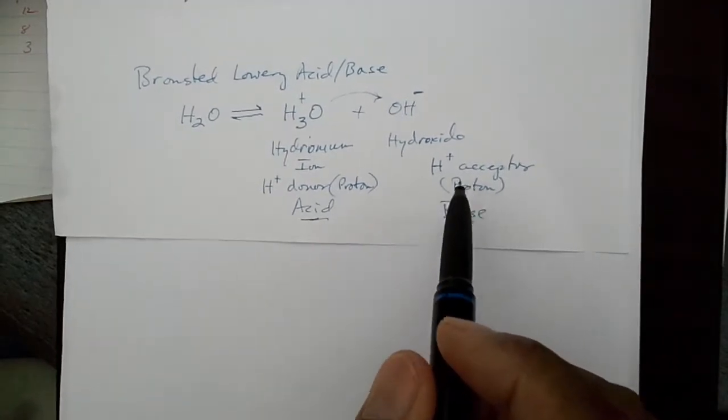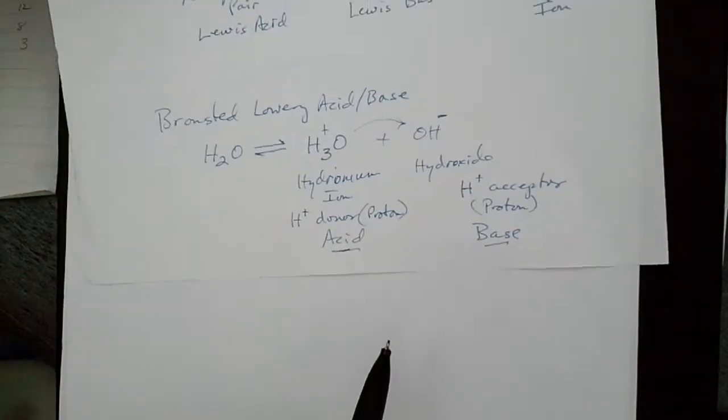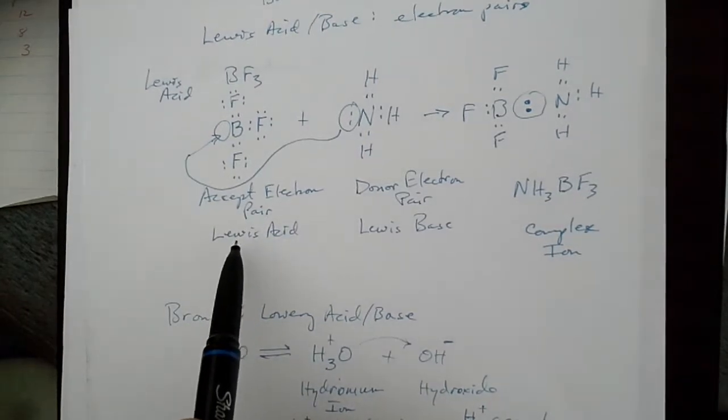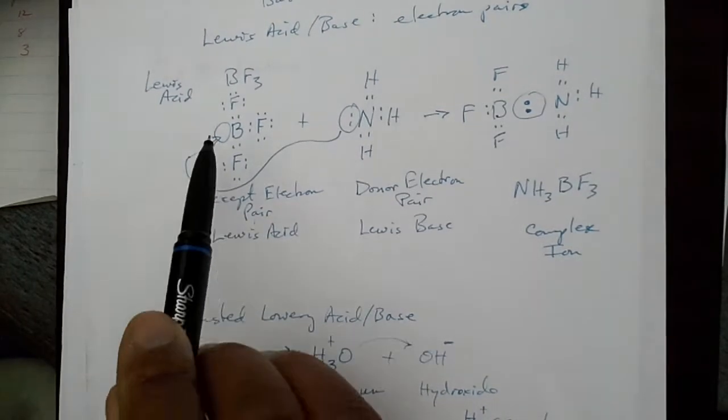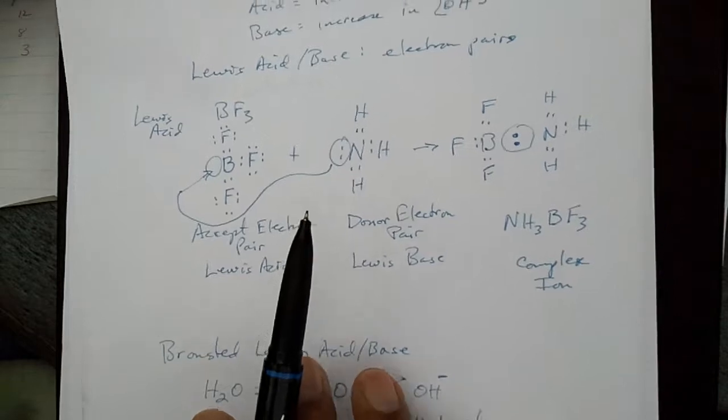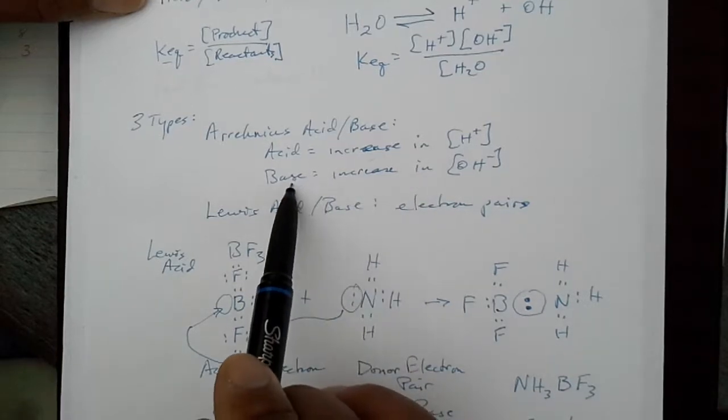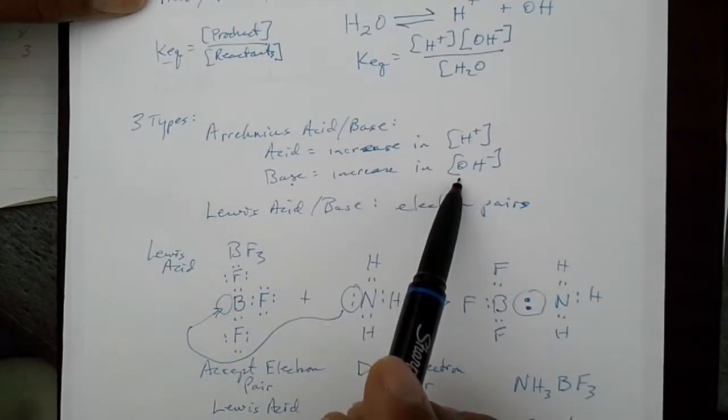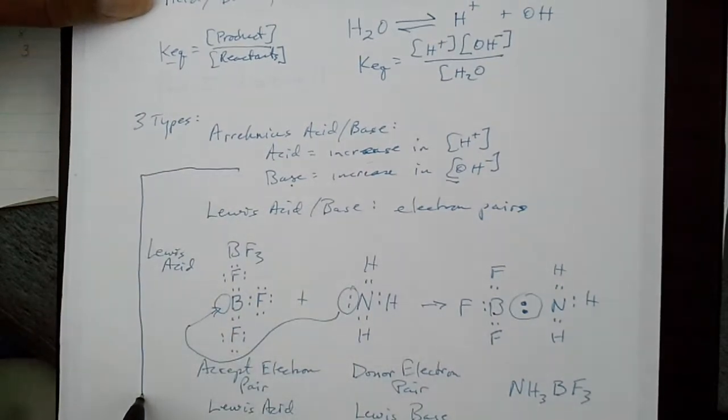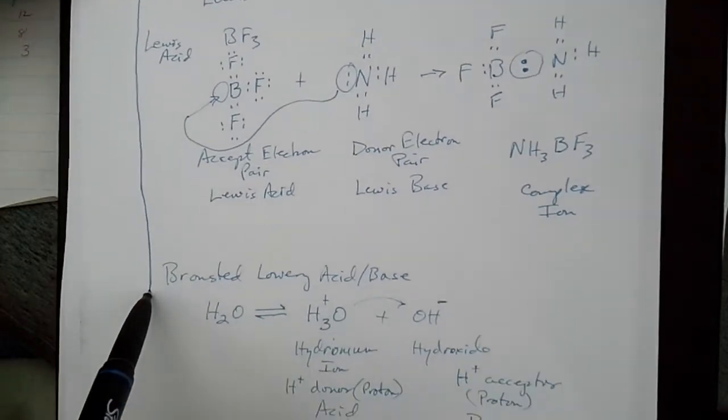And the base is a proton acceptor. And so this is our definition of a Bronsted-Lowry. We already talked about Lewis acids, which are electron pair acceptors, and Lewis bases, which are electron pair donors. And then the Arrhenius acids and bases, the acids increase hydrogen ion concentration. And the base increase hydroxide ion concentration. So there's some very similar properties associated with the Arrhenius acids and bases and the Bronsted-Lowry definition.